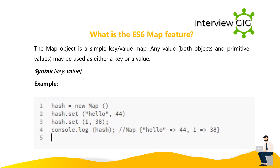What is the ES6 map feature? The map object is a simple key-value map. Any value, both objects and primitive values, may be used as either a key or a value. Syntax: key, value. Example: hash = new Map(); hash.set('hello', 44); hash.set(1, 38); console.log(hash); Output: Map { 'hello' => 44, 1 => 38 }.